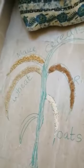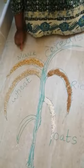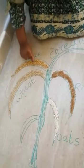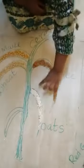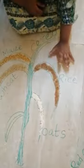Cereals belong to the grass family. Now let us see some examples of cereals. Here I have collected some cereals. The examples of cereals are maize, wheat, oats, and rice.